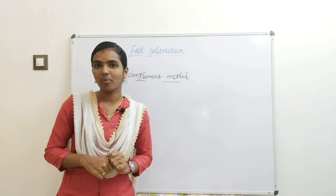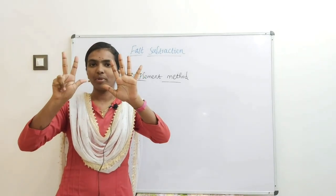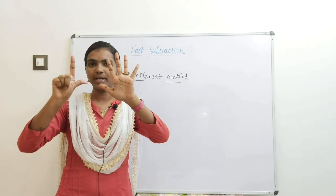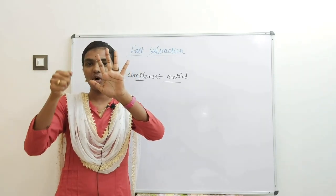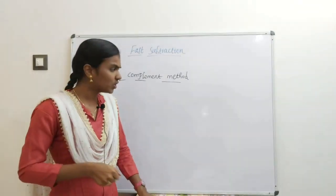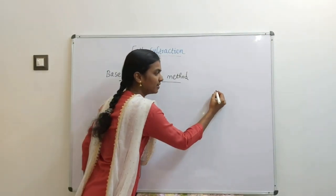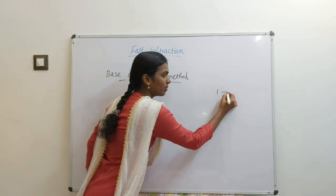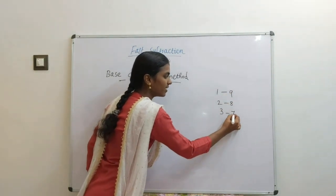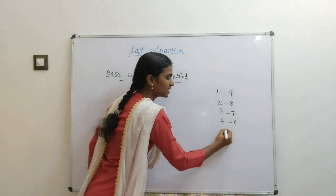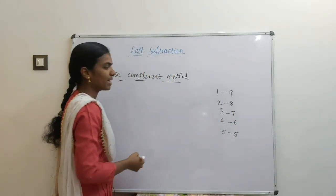The complement of 1 is 9, complement of 2 is 8, complement of 3 is 7, complement of 4 is 6, complement of 5 is 5. We will use these complements during the fast subtraction method.